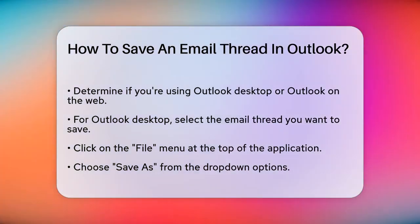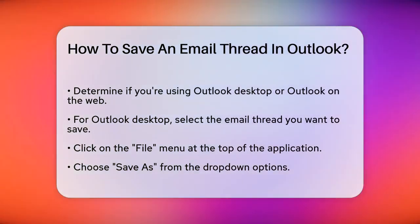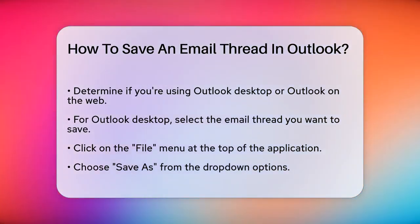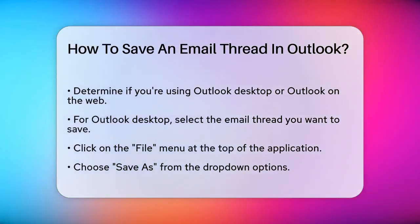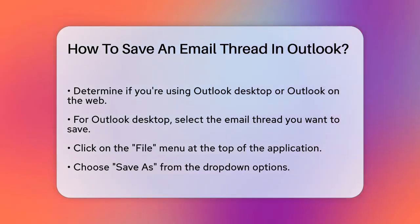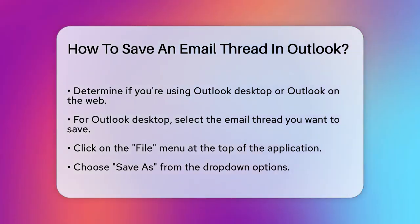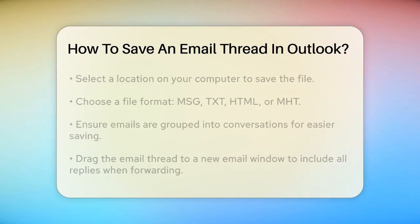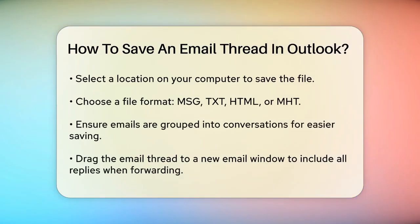If you're using the Outlook desktop application, you can save an email thread in a few different ways. Here's one method. Open Outlook and select the email thread you want to save. Click on the File menu at the top. Select Save As from the drop-down menu. Choose a location on your computer to save the file and select a file format.